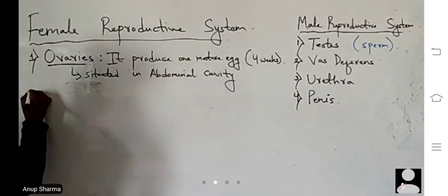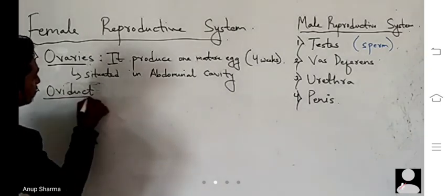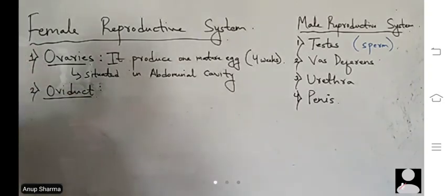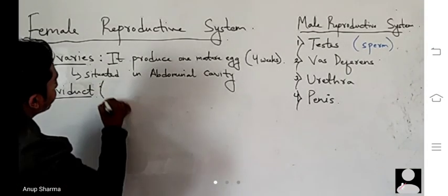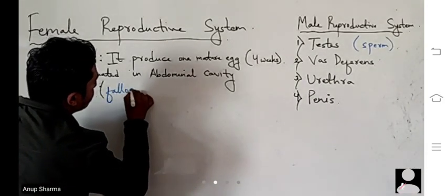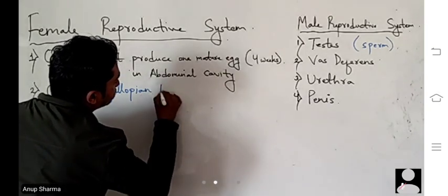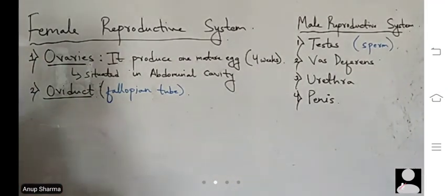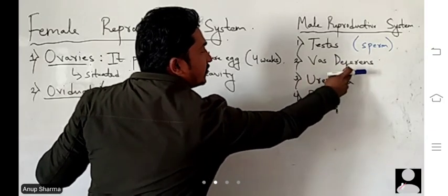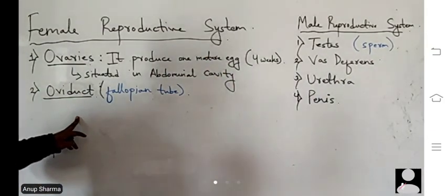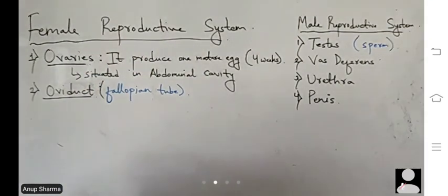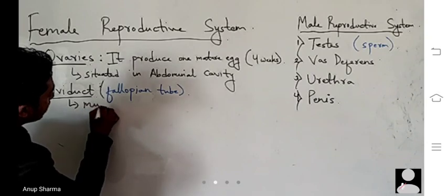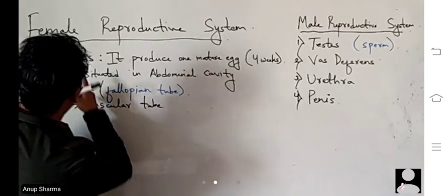The second part is the oviduct, also called the fallopian tube. Its function is similar to the vas deferens in males — the vas deferens was a duct, a sperm duct. So the fallopian tube is also a duct, meaning it is a passage. It is a thin muscular tube which joins the ovary and the uterus.